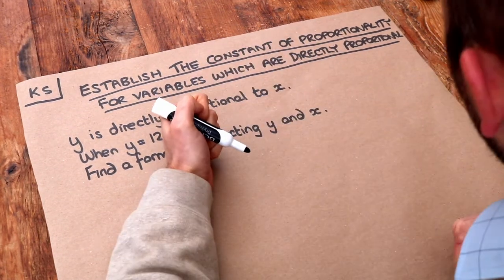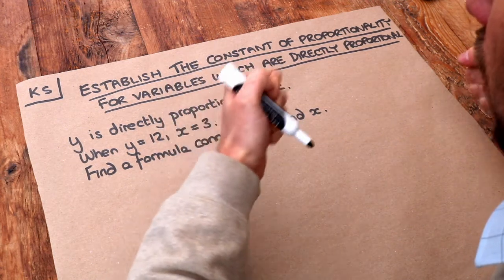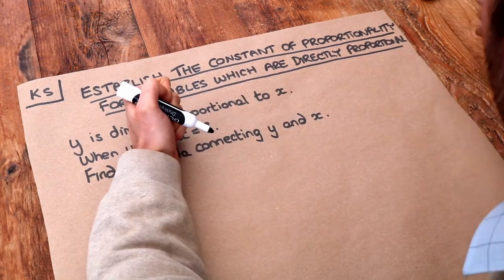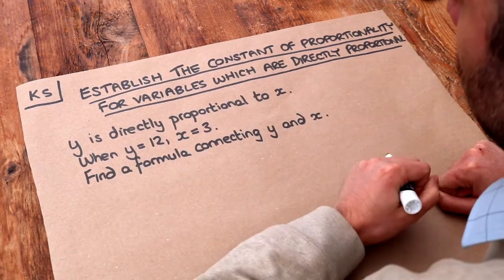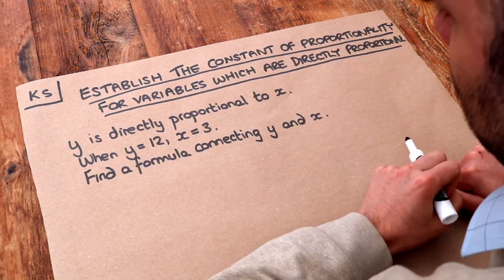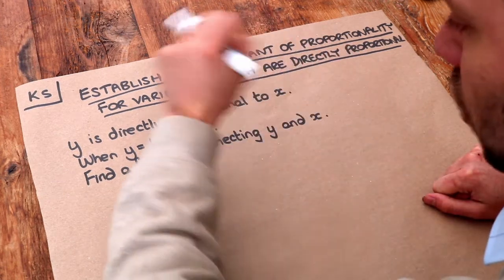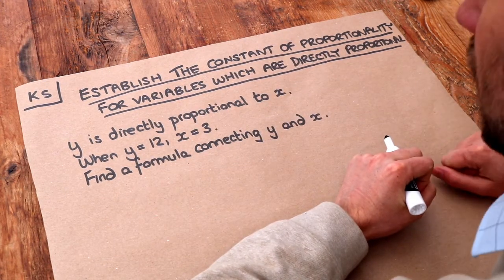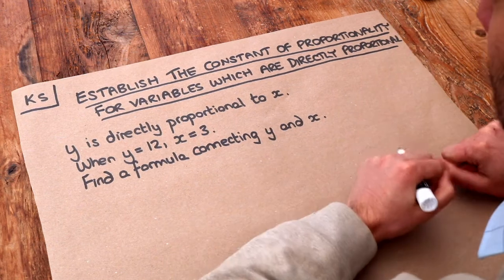So the number of sweets you buy and the cost of those sweets in total are directly proportional because when you double one you double the other. Or imagine a race where you have a fixed amount of time and you want to run as fast as possible. If you were to double your speed, you would double the distance that you covered in that fixed amount of time.